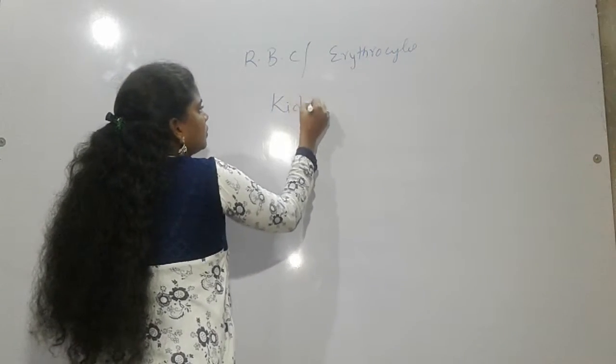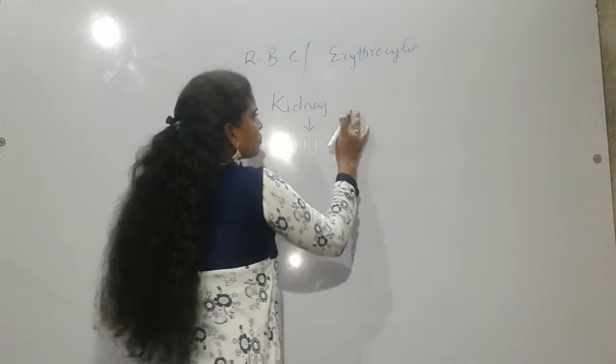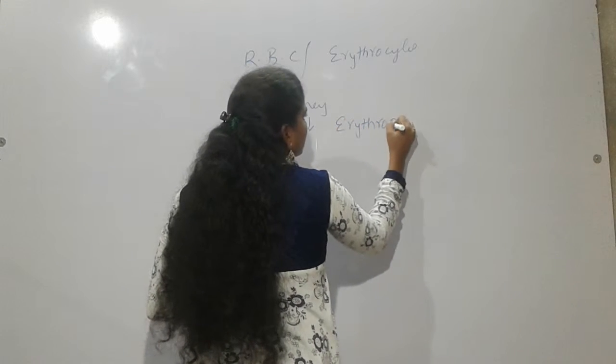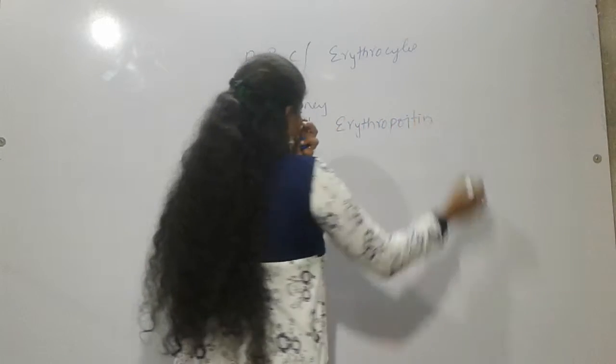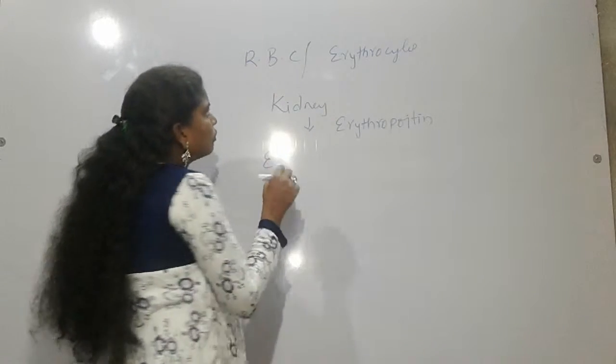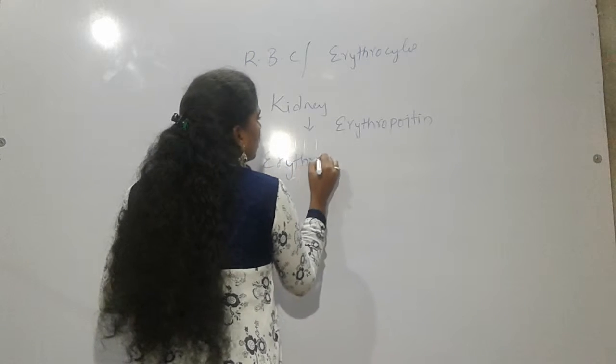Our kidneys produce one hormone called erythropoietin. That leads to the process of formation of RBC called erythropoiesis.